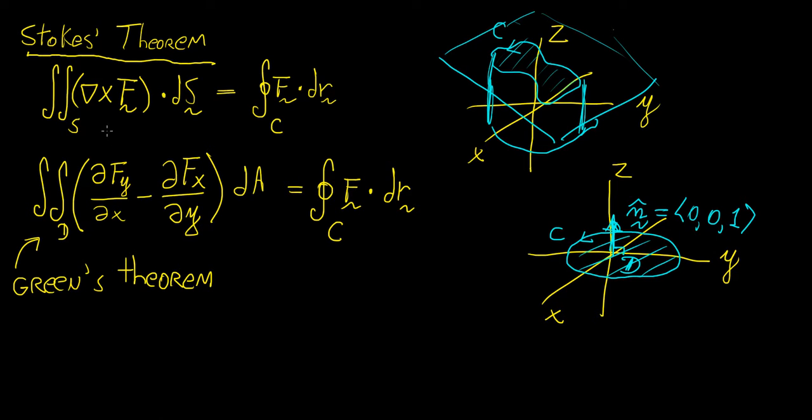then if we were to take the curl of a vector field with respect to that normal vector, then we would actually get the following expression. And it turns out that this expression here gives us the total line integral of the vector field along that curve C.